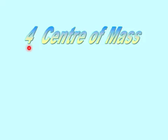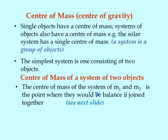Center of mass, or center of gravity. Single objects have a center of mass. Systems of objects also have a center of mass. For example, our solar system has a single center of mass. A system is simply a group of objects. The simplest system is one consisting of two objects.